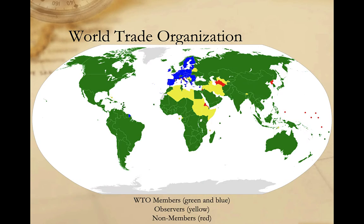As of 2020, the WTO has 164 member states represented in green and blue on this map, and 24 observer governments shown in yellow. Most of the observer governments are in various stages of ascending to full membership in the organization. Collectively, the member states and observer states represent more than 99 percent of the world's trade, gross domestic product, and population.